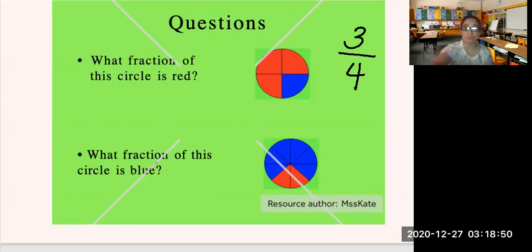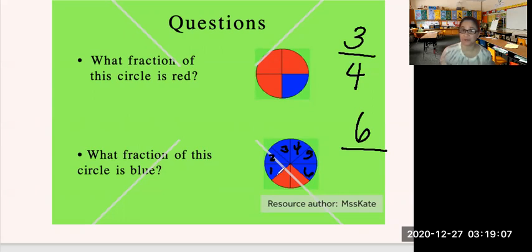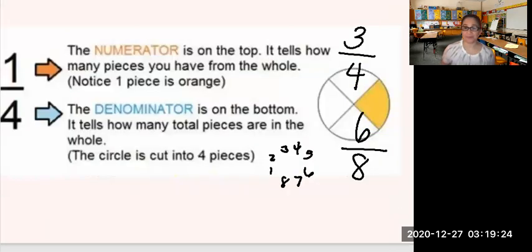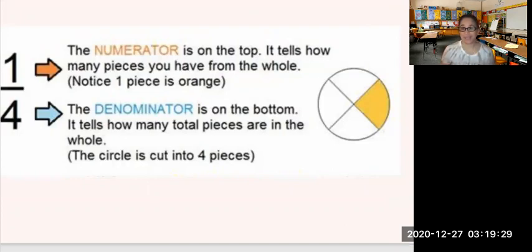What fraction of this circle is blue? Let's count how many blue parts we have: one, two, three, four, five, six — so I put the number 6 on top. Now, how many parts are there all in all: one, two, three, four, five, six, seven, eight. So the number 8 goes at the bottom. The fraction for the blue part of this circle is six-eighths. Remember, there are two parts in a fraction — the number on top, called the numerator, tells you how many pieces you have from the whole; and the number at the bottom, called the denominator, tells you how many total pieces there are in the whole. Numerator on top, denominator at the bottom.